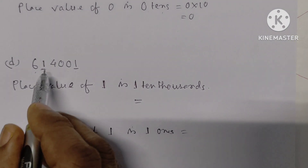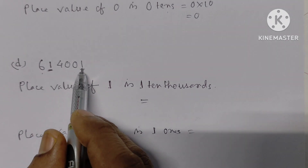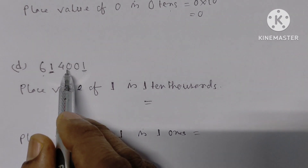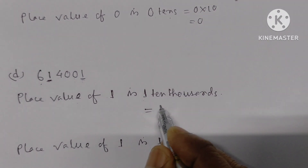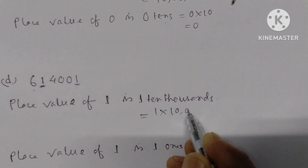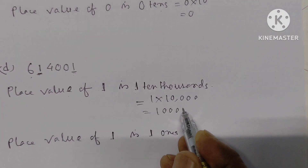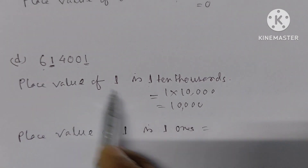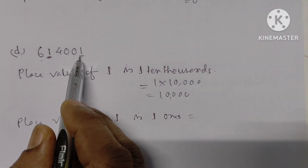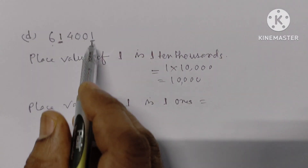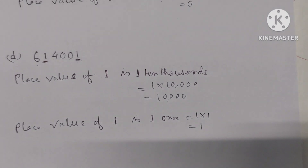Part D: The number is 6,14,001. We have to find the place value of the two underlined 1s. Counting the places: ones, tens, hundreds, thousands, ten-thousands — the first underlined 1 is in the ten-thousands place. Its place value is 1 into 10,000, that is 10,000. The second underlined 1 is in the ones place. Its place value is 1 into 1, that is 1.